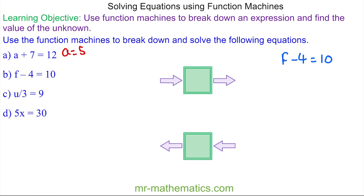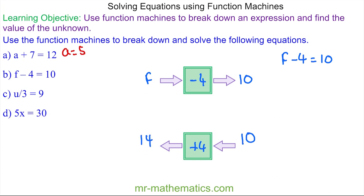For question b, f is the value we're trying to find, so this goes into our function machine. The subtraction of 4 is our function, so that goes here, and the output is equal to 10. To solve this equation we work the problem backwards: we have 10 going in, we do the opposite of take away 4, which is add 4, and 10 + 4 = 14, so f = 14.